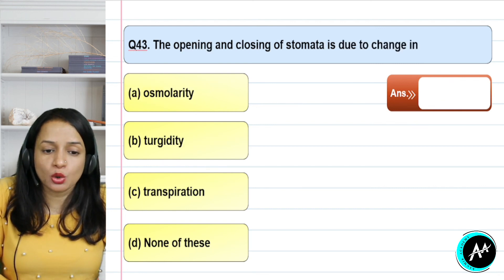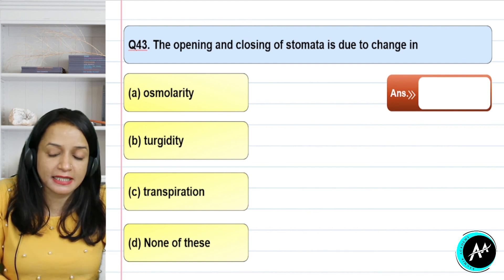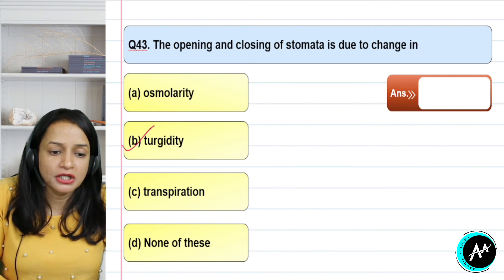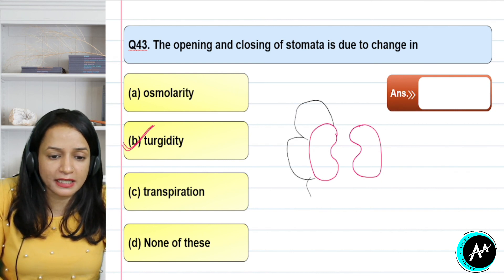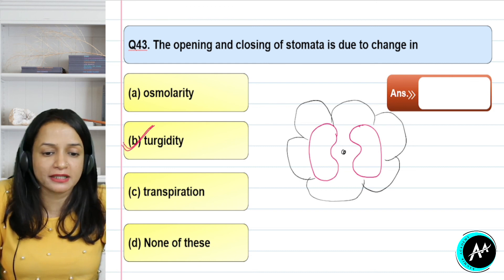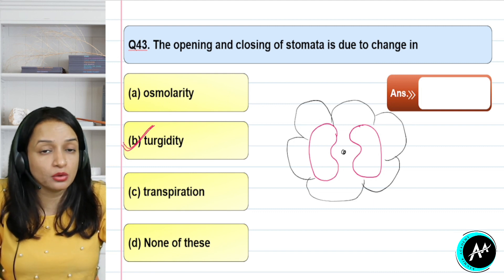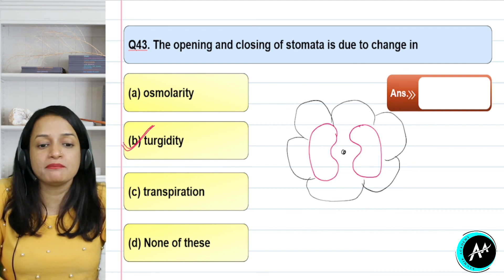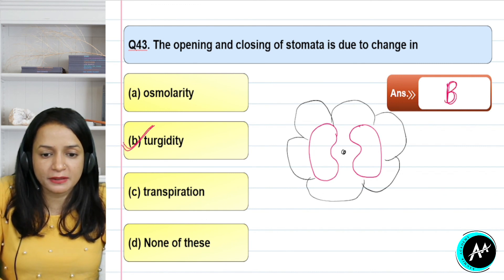Question 43: the opening and closing of stomata is due to change in what? The stomata are surrounded by guard cells in a kidney shape, with the opening in the middle. Whether the guard cells are turgid or have shrunk decides if the stomata open or close. Turgidity is very important in controlling stomatal opening and closing. The correct answer for question 43 is option B — turgidity.